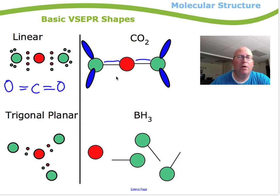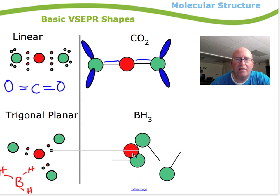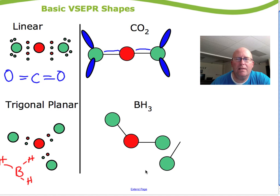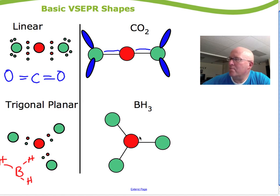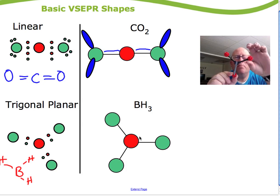Let's try another one — trigonal planar. 'Tri' meaning three. Boron is an interesting element that rather than going for eight electrons, it likes to go for six. Here I've drawn boron trihydride with boron in the middle and a hydrogen on each side — that's the Lewis structure. These bonding electrons are trying to stay as far apart from each other as possible. Here's a 3D example — it's still planar like you can see in a line, but it's trigonal, like a triangle.